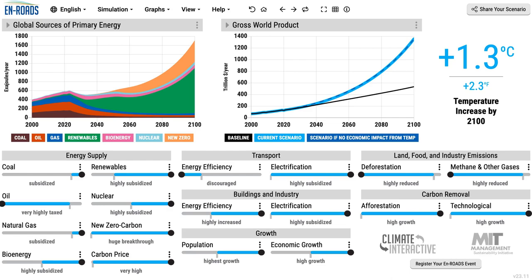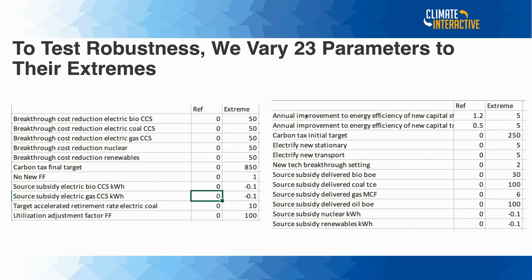What we did with En-ROADS is that as we built the model, we automated that process. We took 23 parameters and varied them to their extremes — cost reduction in bio-CCS, nuclear renewables, no new fossil fuels, electrification from zero to 50 or zero to one — and changed all of them in all of their possible combinations together.